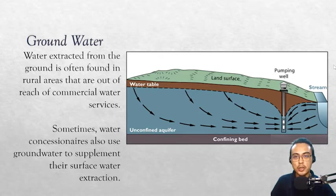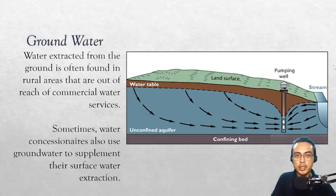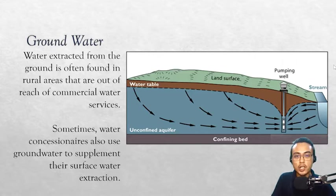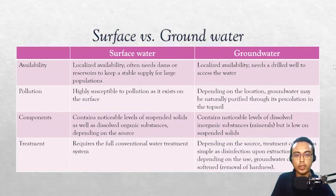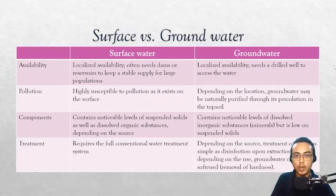Groundwater, from the name itself, is water extracted from the ground. In the Philippines it is often found in rural areas out of reach of commercial water services — places that are self-reliant on their water needs because you can extract groundwater on site. In some places it is necessary for water concessionaires to utilize groundwater, especially if surface water sources have dried up or are very polluted. Let's differentiate surface water and groundwater based on availability, pollution, components, and treatments.